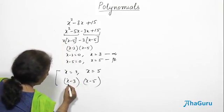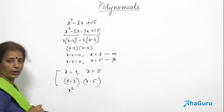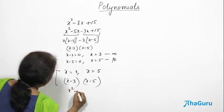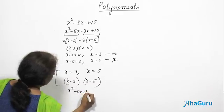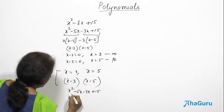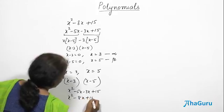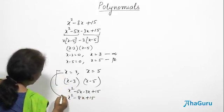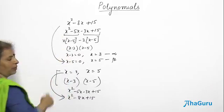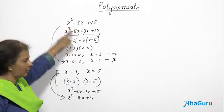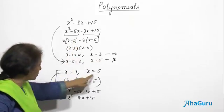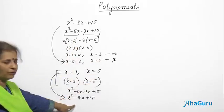So multiplying: x into x gives x squared, then x into minus 5 gives minus 5x, then minus 3x, then plus 15. This turns out to be x squared minus 8x plus 15. From the polynomial we found the roots, and from the roots we came back to the polynomial. So when the polynomial is given, we can find the zeros. And if the roots are given, I can find the polynomial.